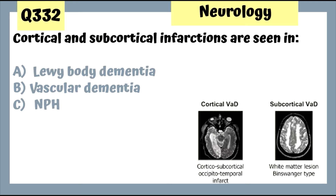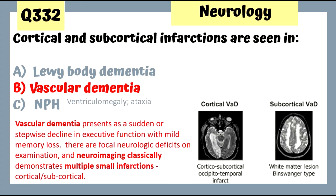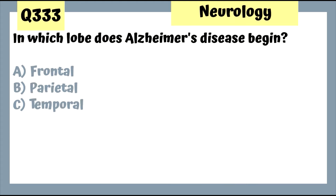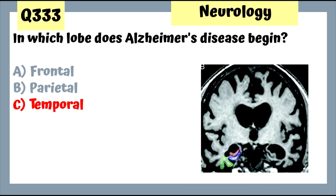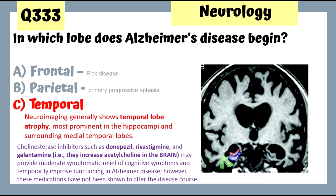Question 332: Cortical and subcortical infarctions are associated with vascular dementia and lacunar strokes. Question 333: In which lobe does Alzheimer's disease begin? The temporal lobe. Neuroimaging may show temporal lobe atrophy. Don't forget to review the medications for Alzheimer's.